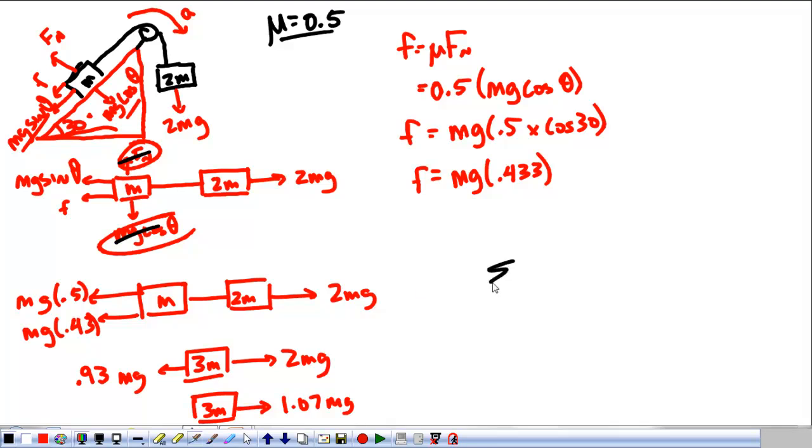So we can take all of that and put it into the sum of my forces equals mass times acceleration. So 1.07Mg equals mass times acceleration. M's cross out. Sorry, 3 mass times the acceleration. I have 3 masses here. So those cross out and I have 10.7 equals 3 times the acceleration.